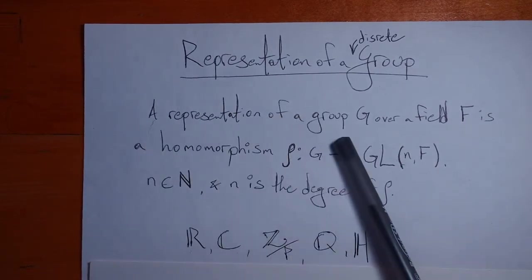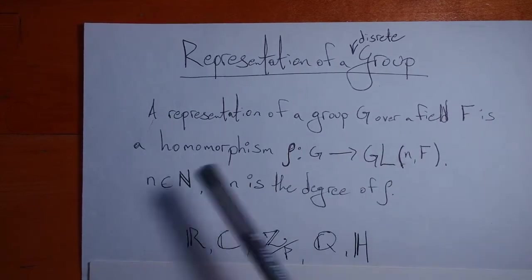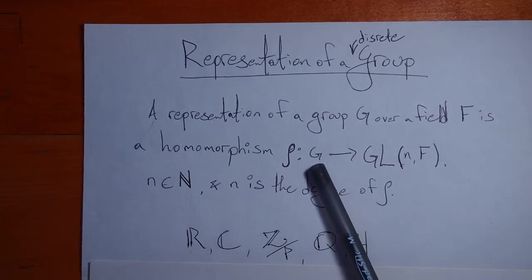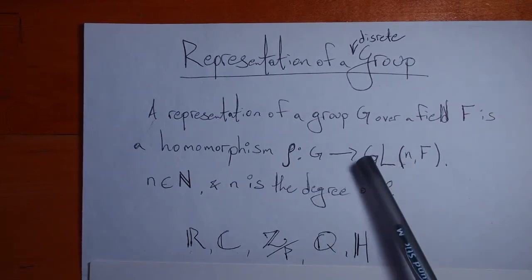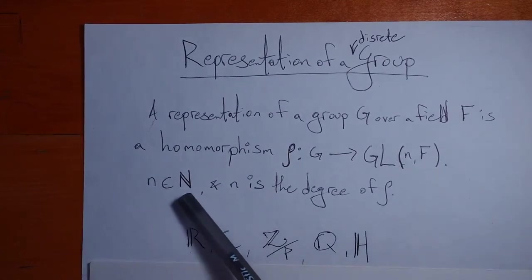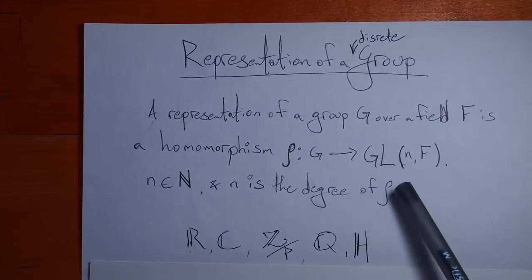So a representation of a group G over a field F is a homomorphism rho that maps from your group to the group of general linear matrices, GL(n,F). N is a natural number, and we say that N is the degree of the representation.